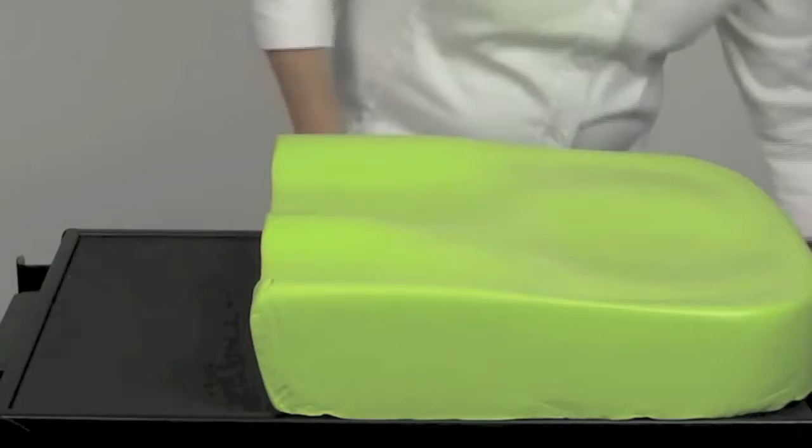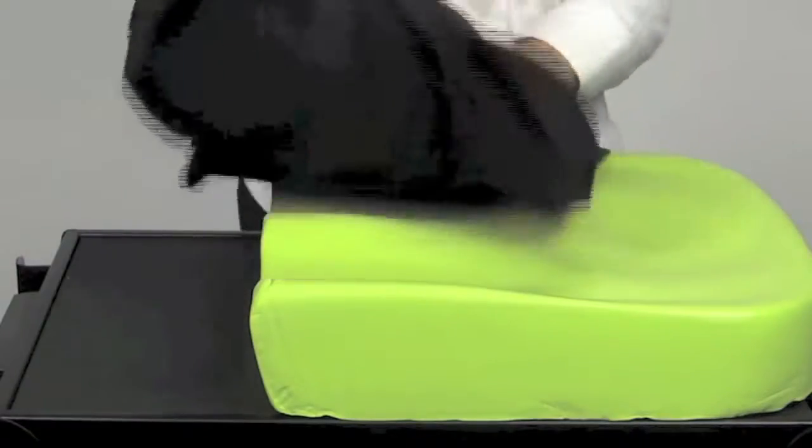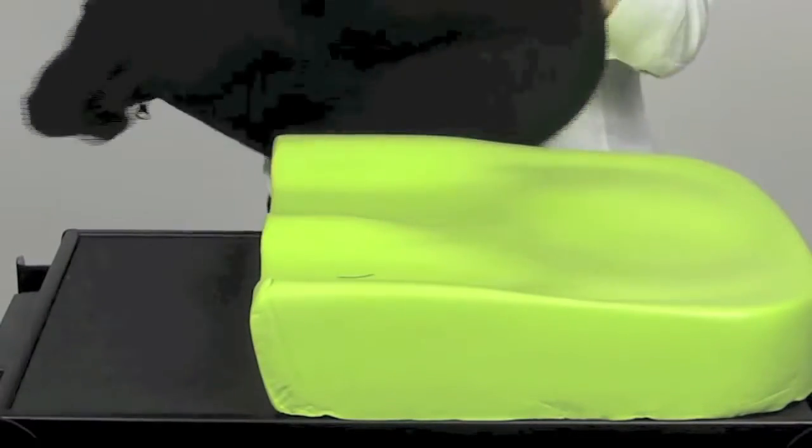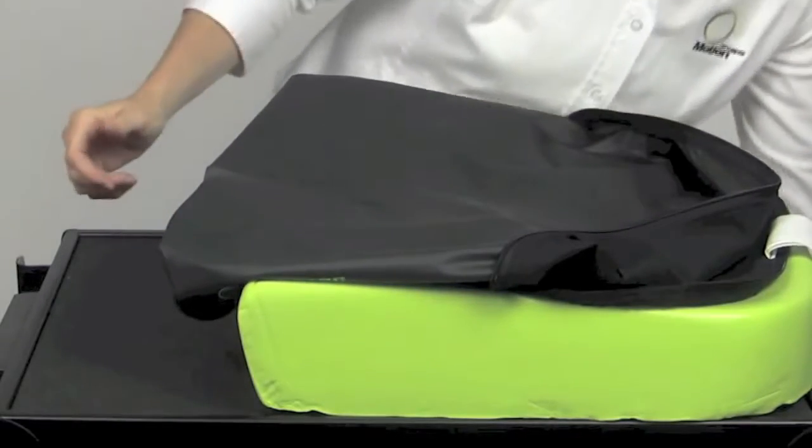A reversible Dartex cover is standard on all pediatric and regular adult sizes and can be used fabric side out or smooth side out. On heavy duty sizes, you must specify smooth or fabric side out.